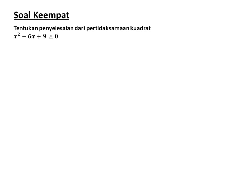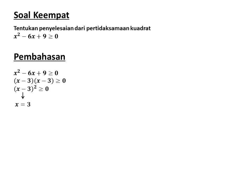Soal keempat: tentukan penyelesaian dari pertidaksamaan x² - 6x + 9 ≥ 0. Faktorkan ruas kiri: (x - 3)(x - 3) atau (x - 3)², sehingga x = 3 — ini adalah akar kembar. Buat garis bilangan, pasangkan angka 3. Tanda ketidaksamaannya lebih dari sama dengan (ada sama dengannya), sehingga bulatannya penuh.